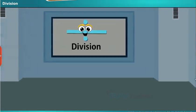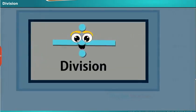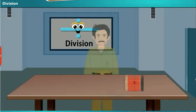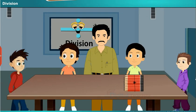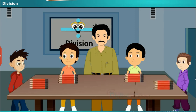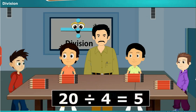Let us see another example of equal sharing, i.e. division. Suppose Ramu brought 20 pencils for his 4 kids and asked them to share equally. How did they share and how many pencils did each get? Kid 1 started distributing the pencils one after the other. Finally, each of them got 5 pencils. In the simplest way, we can divide 20 by 4 and the result is 5. Each of them will get 5 pencils.